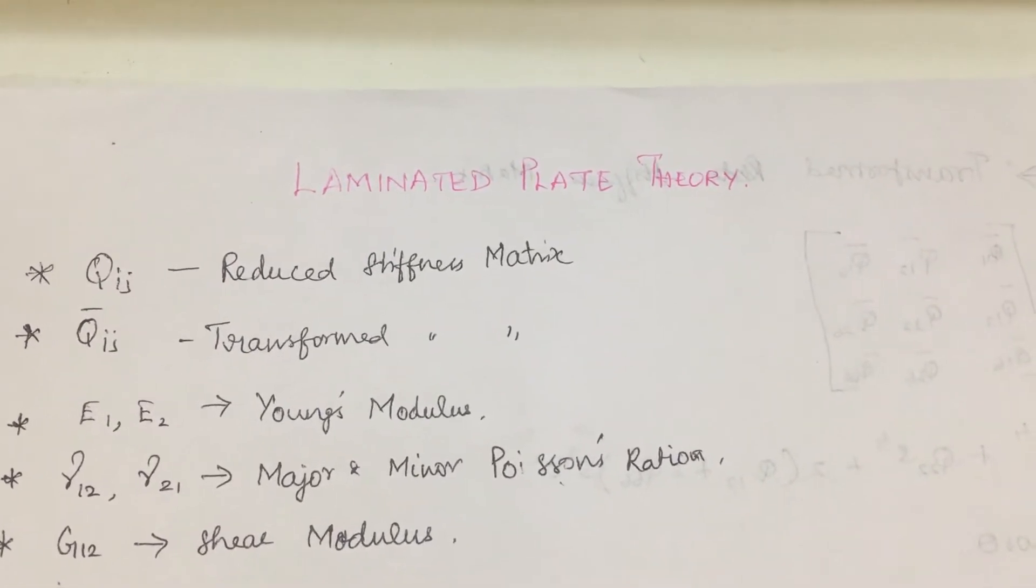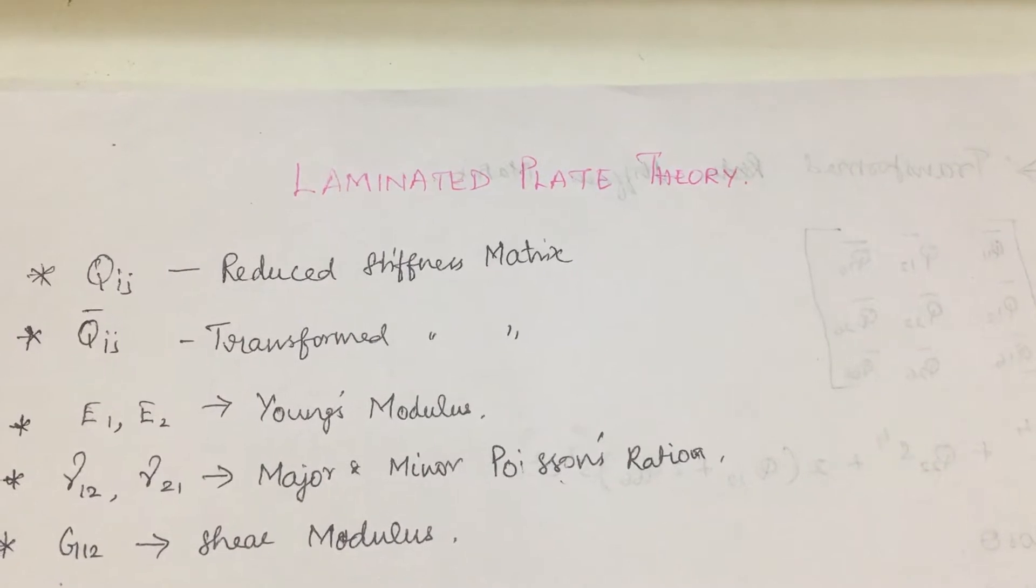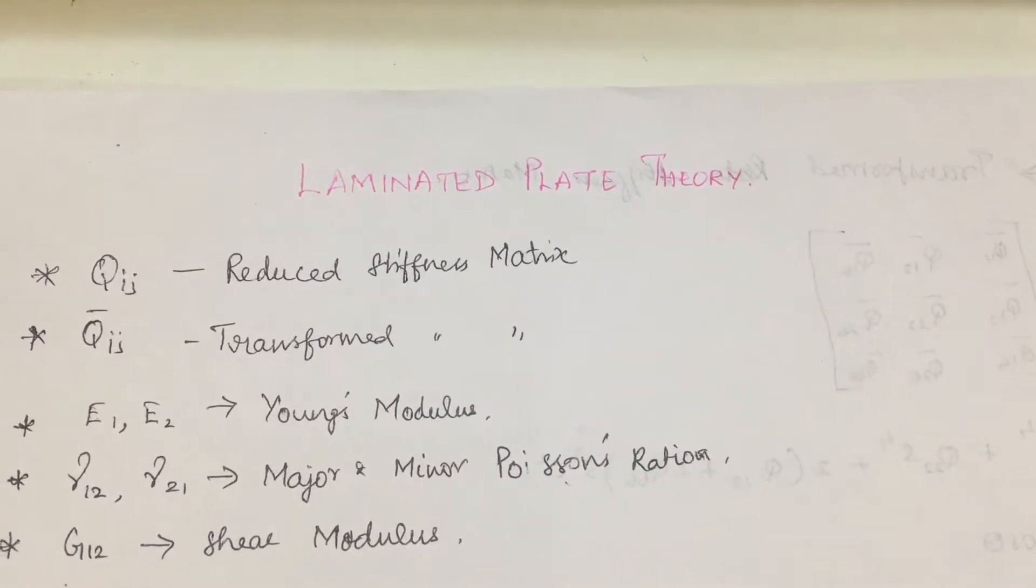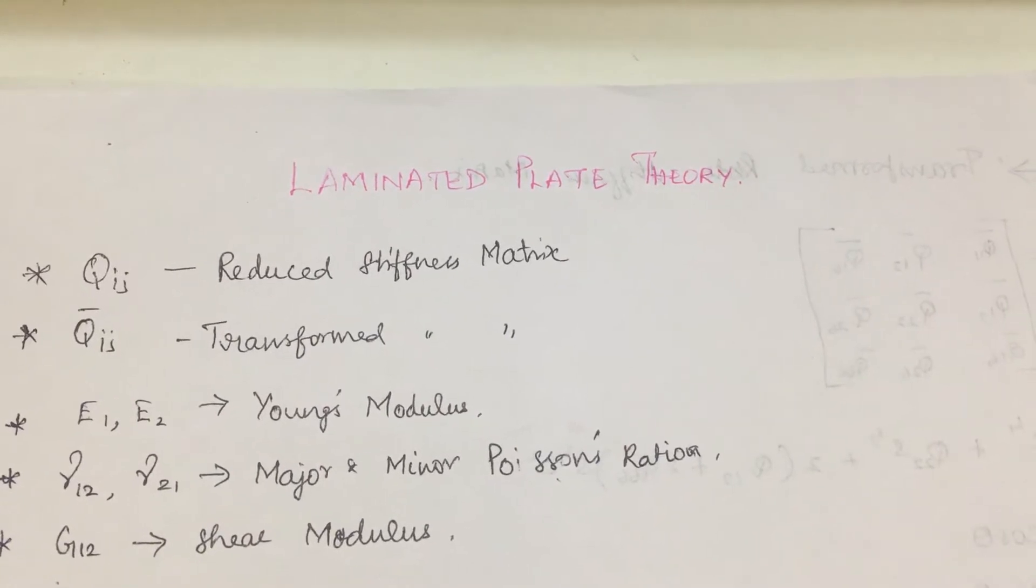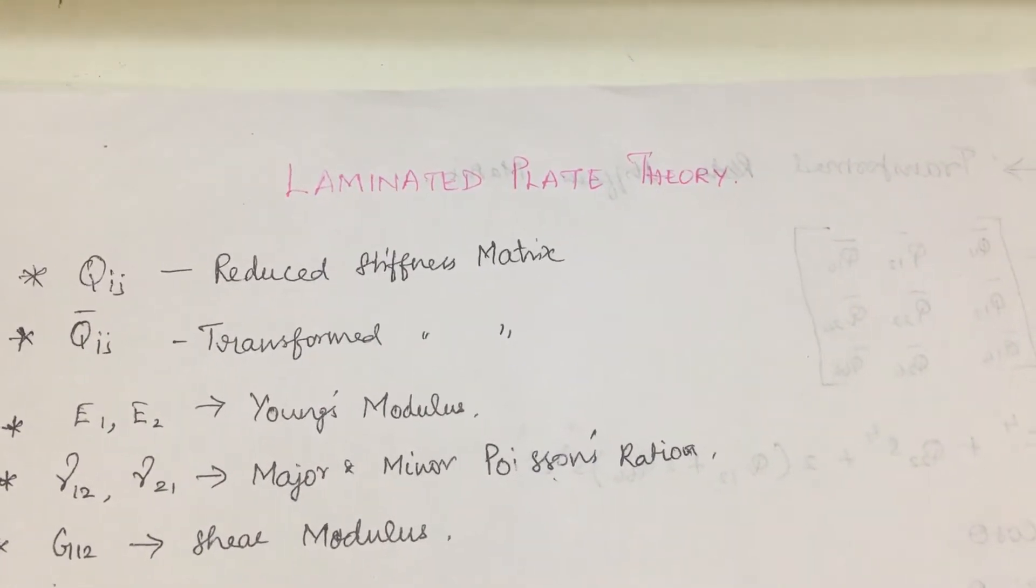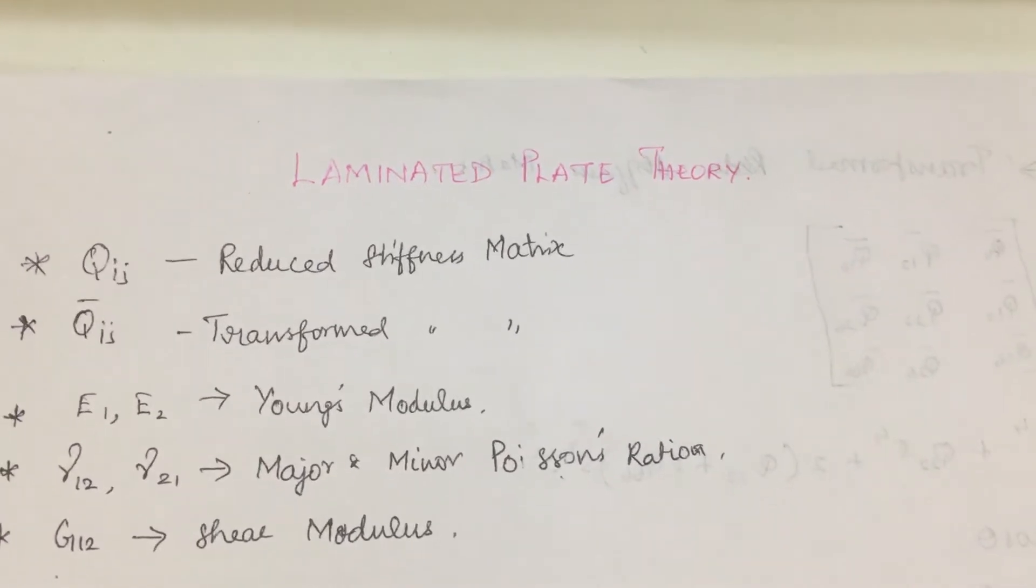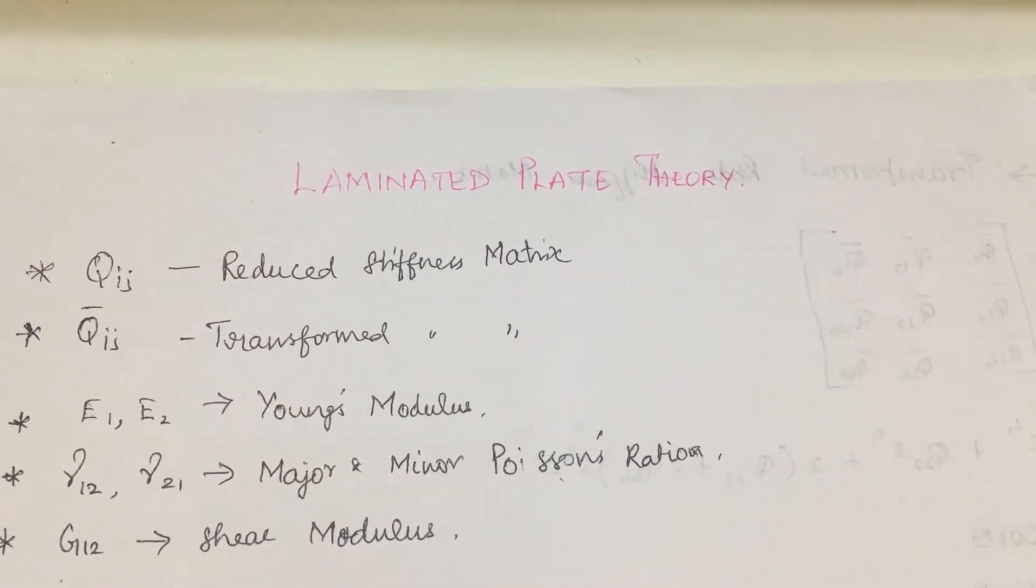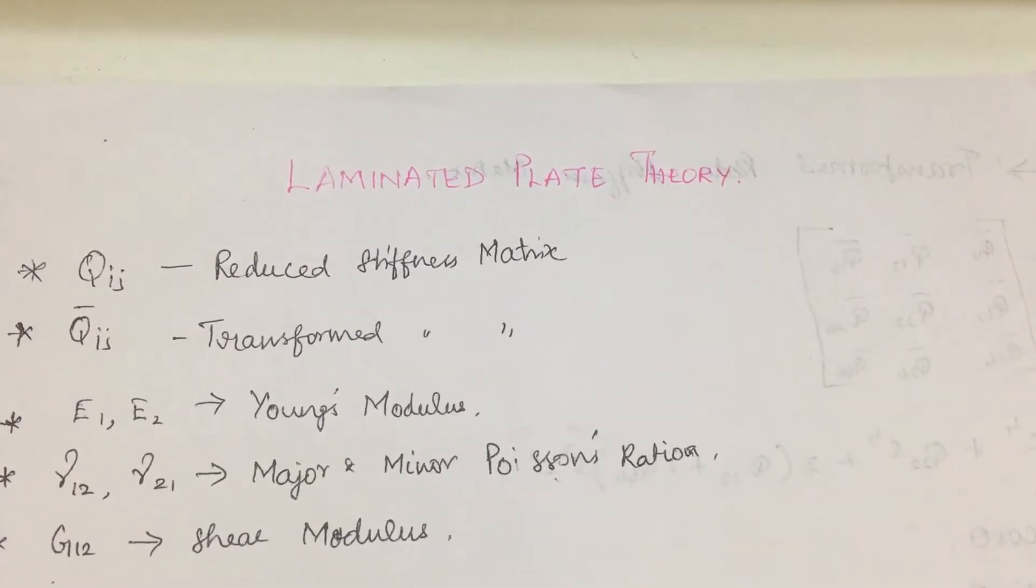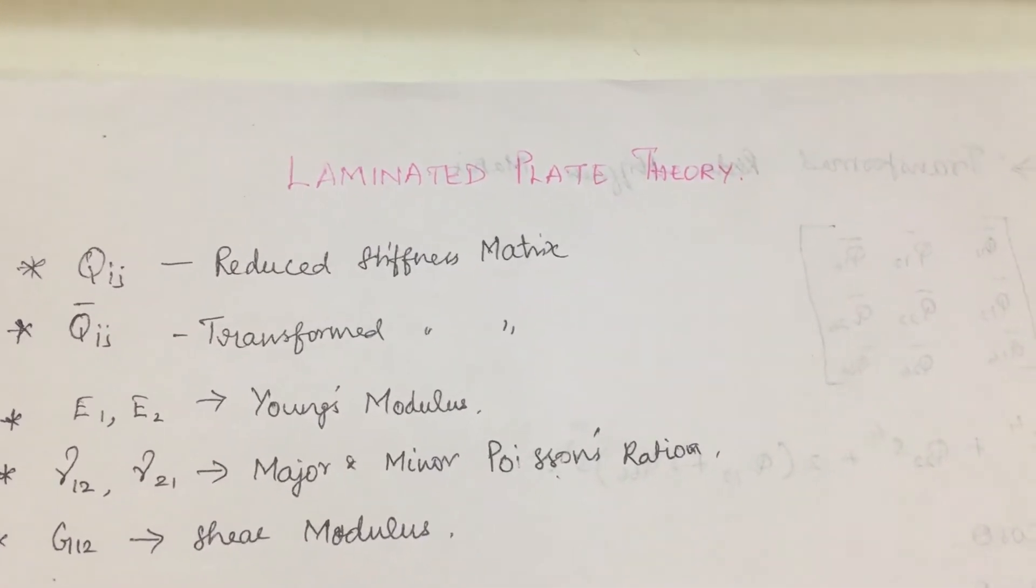Next, mu12 and mu21, which are called the major and minor Poisson's ratio. Finally, G12, which stands for shear modulus. All these formulas are required for solving laminated plate theory problems.